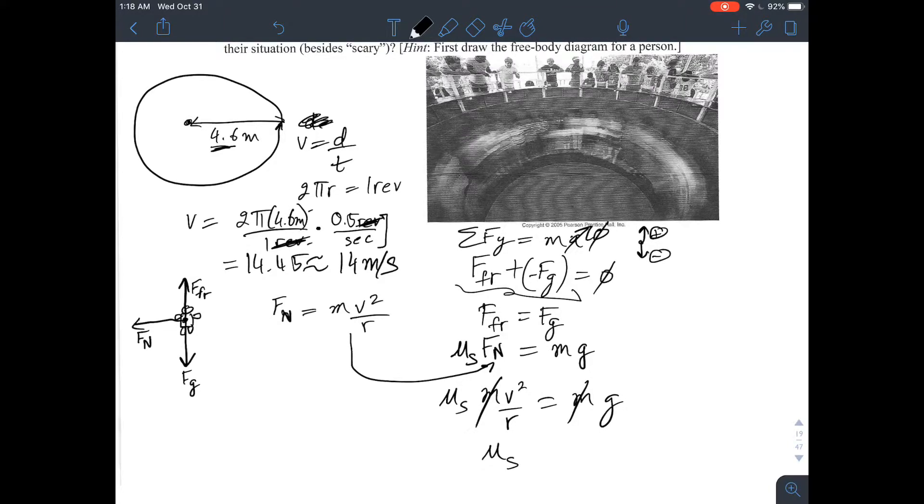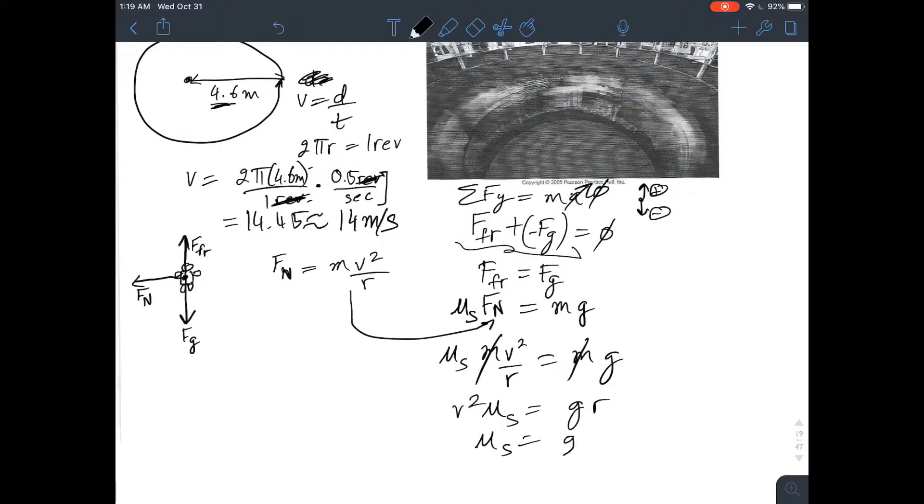And static friction is equal to... Let's see. What else can we cancel out? We can send that radius to the other side. After that, we could maybe send even the velocity to the other side. And now, if we substitute this, gravity is 10 meters per second squared. Radius is 4.6 meters. Velocity, we calculated 14 meters per second. And then, that will give you 0.23. There are no units. All the units go away. Coefficients of friction never have any units. So, 0.23.